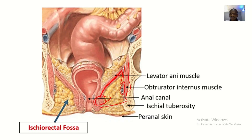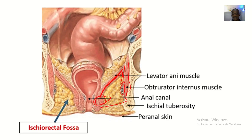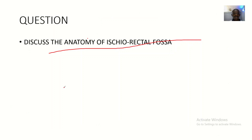The lateral wall of the ischio-rectal fossa is formed by the obturator internus muscle and the obturator fascia, which opens up to form the pudendal canal, also called the Alcock's canal. Remember — relate anatomy, don't just memorize it. That's it about the anatomy of the ischio-rectal fossa. See you in the next tutorial.